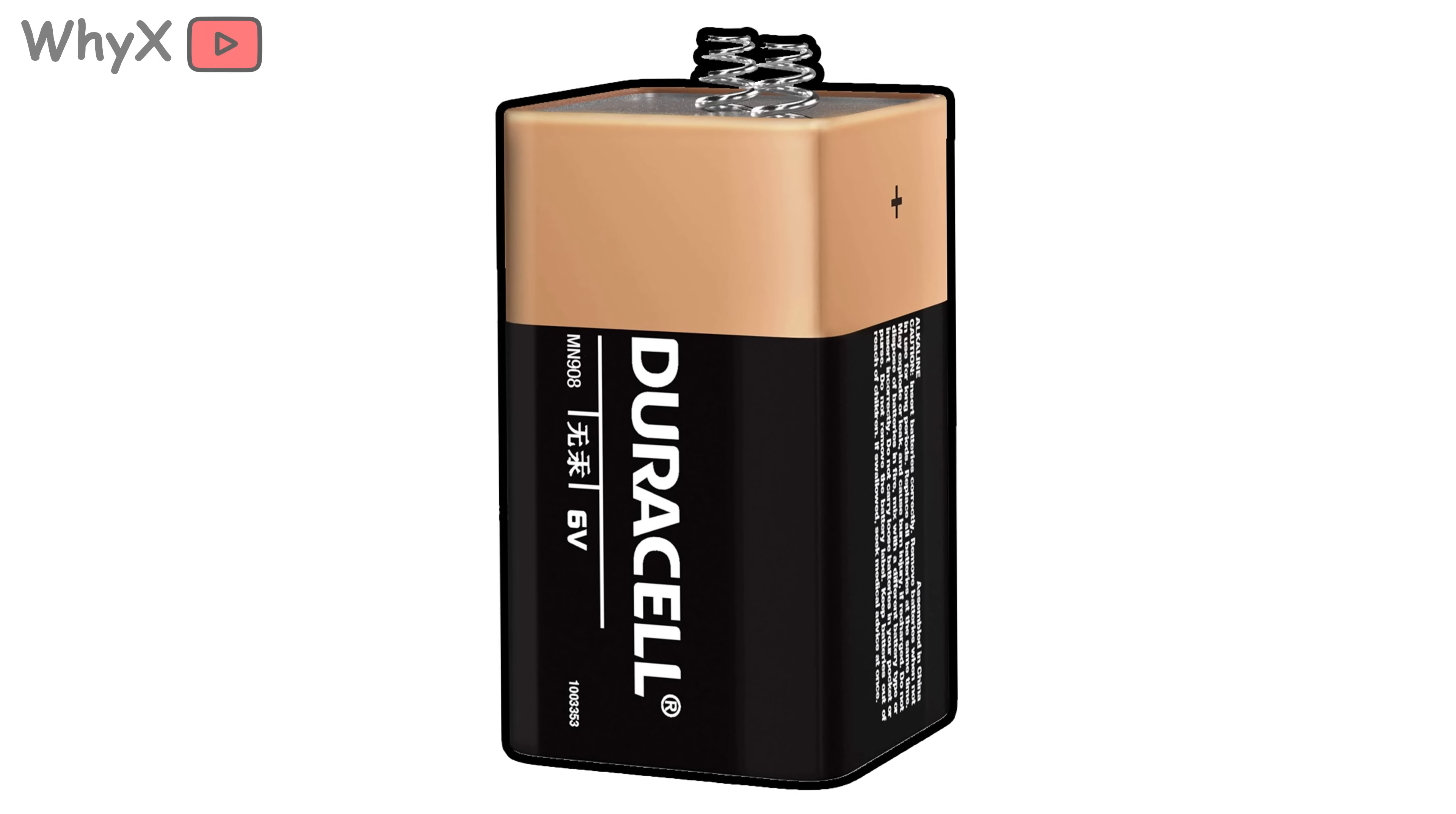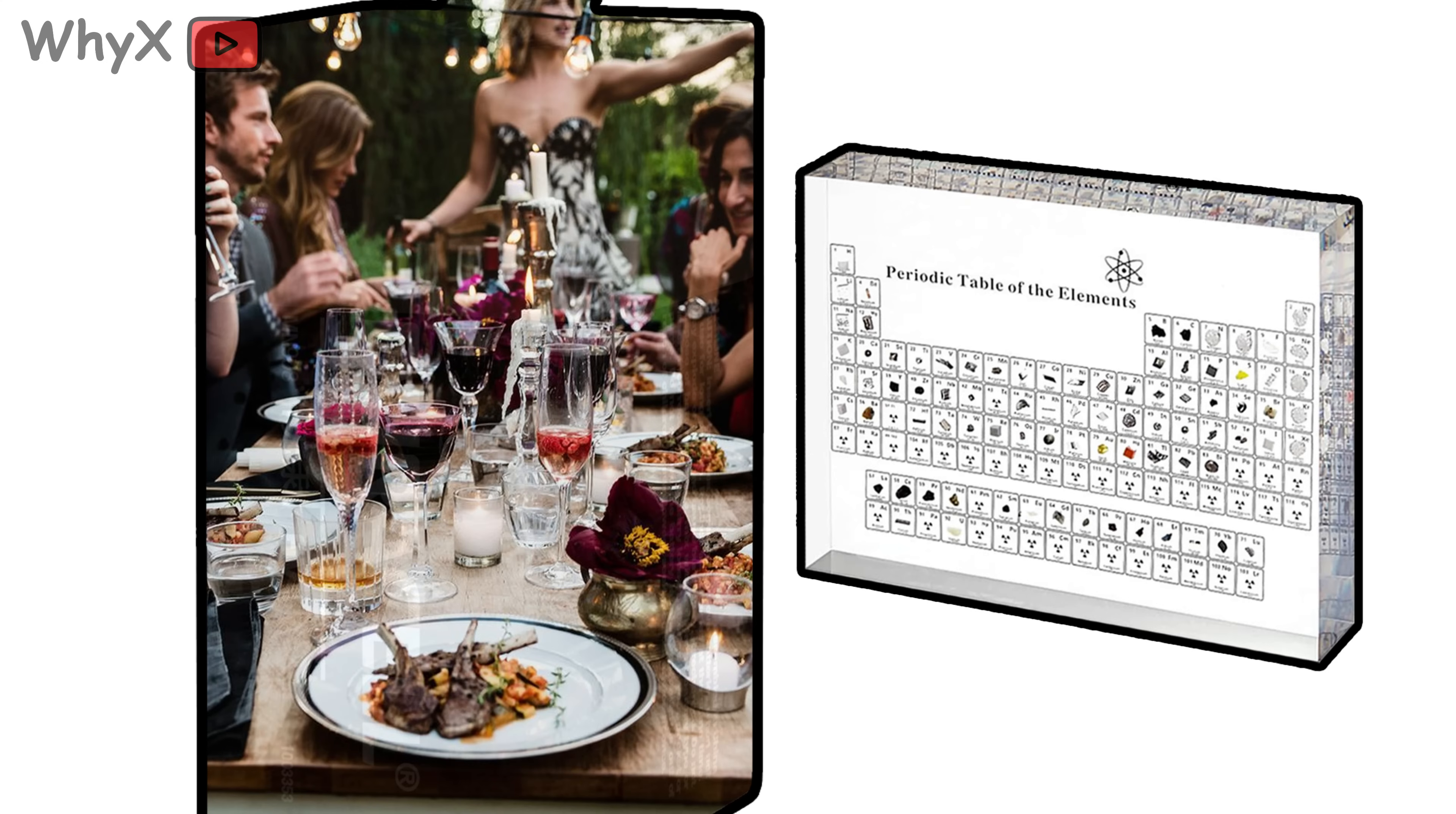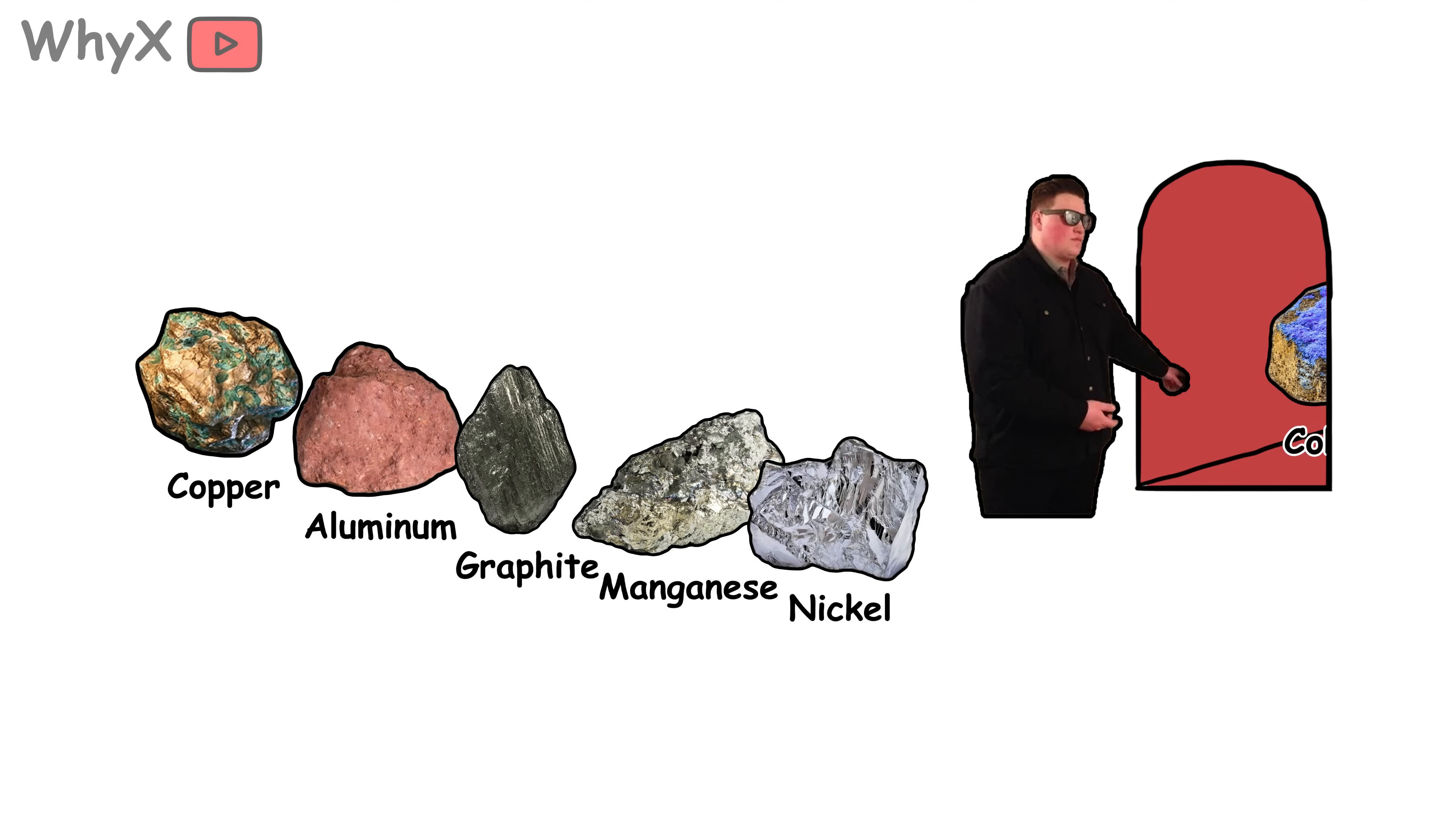From the outside, a battery seems boring. Just a sealed block inside your device, maybe with a warning label you have never read. But inside, it is like a high-stakes dinner party hosted by the periodic table itself. The guest list includes lithium, cobalt, nickel, manganese, graphite, and sometimes a dash of aluminum or copper.